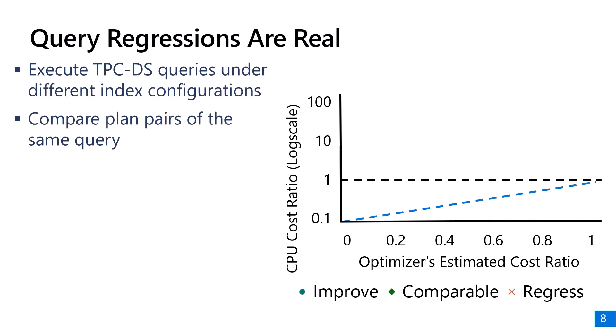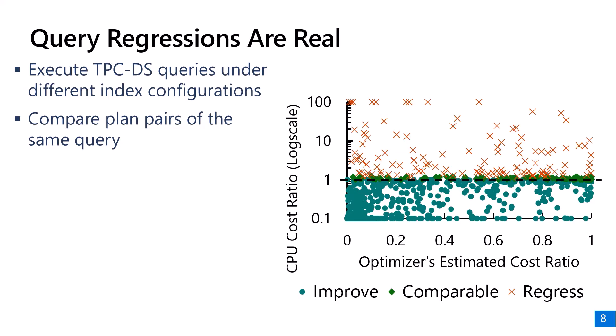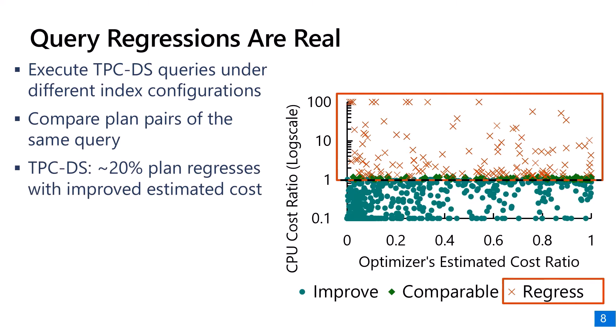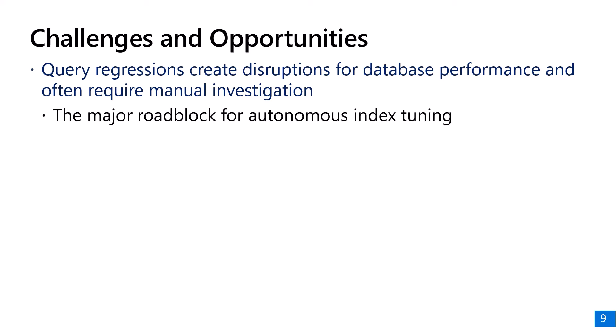Since we only care about whether a plan regresses or not, we would at least want plans that are estimated to be cheaper to actually be cheaper in execution cost. However, the result of this micro-benchmark shows that although the new plans are estimated to be cheaper, about 20% of them turn out to have higher CPU cost. In addition, there are quite a few cases where the new plans are not just more expensive but an order of magnitude more expensive in CPU cost.